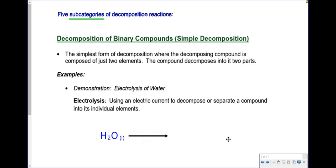It's the simplest form of decomposition where the decomposing compound is composed of just two elements — that's where the binary comes from, two parts. The compound decomposes into two parts, like A and B breaking up into A plus B. Take a look at the first example: the electrolysis of water. Water is a pretty stable molecule and needs a little help to break apart. Electrolysis is simply using an electric current to decompose a compound into its individual elements, breaking the chemical bonds and allowing the hydrogen and oxygen to separate.